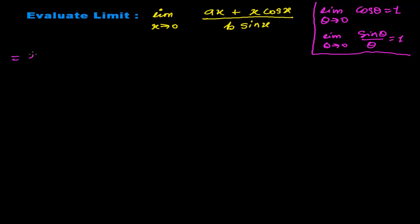First, let me write what we have: limit when x tends to 0 of (ax + x cos x) / (b sin x). Nothing is coming to my mind except this x. I'm looking at these two x terms - see here, I think we can take these x's common.